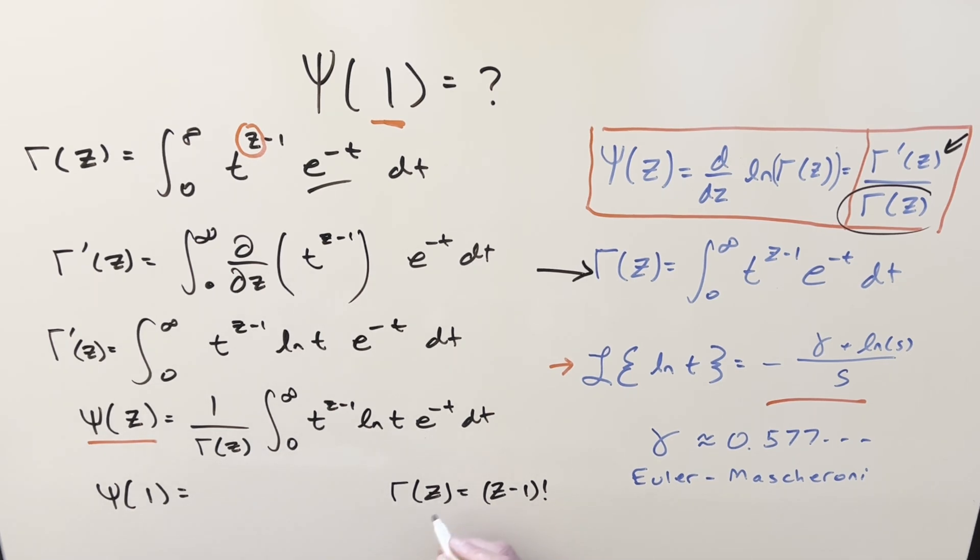So here, if we have gamma of one, this is going to be like zero factorial, and that's just one. So here we just have one over one. So that whole part goes away. So let's just plug in now to the integral. But here, if we plug one into the exponent for Z, one minus one is zero, T to the zero is just one. So that part is going to go away when we plug in one here. So then we'll just have natural log of T, e^(-T), dT.